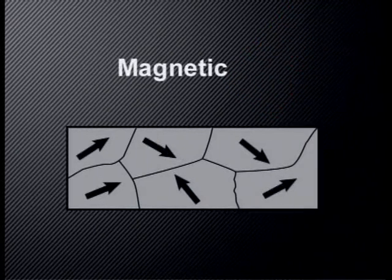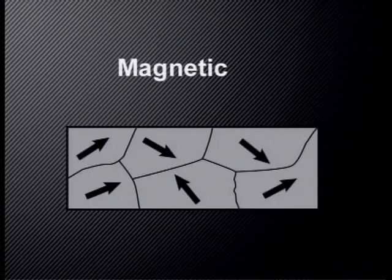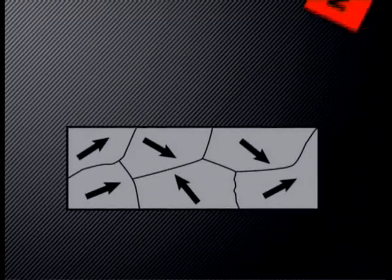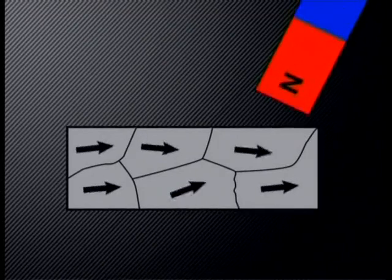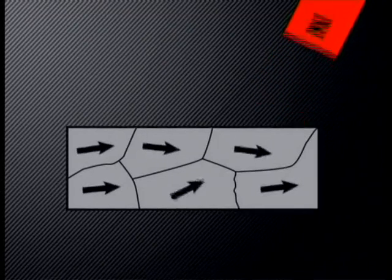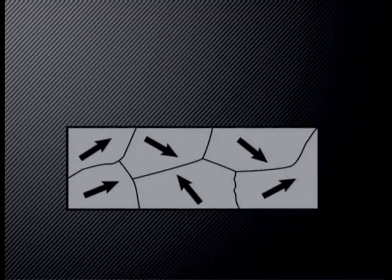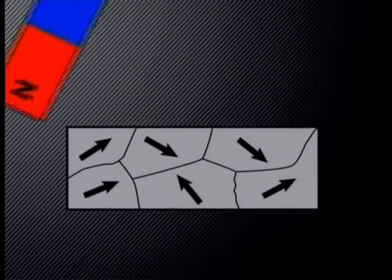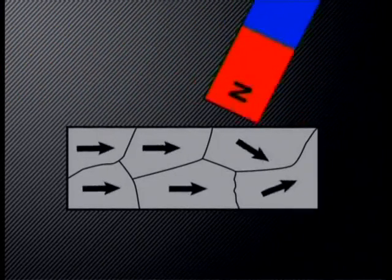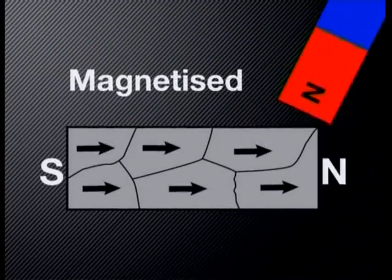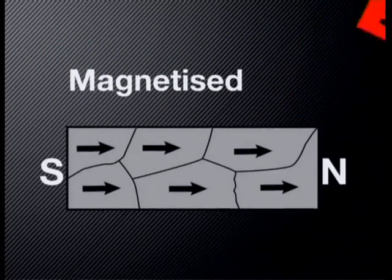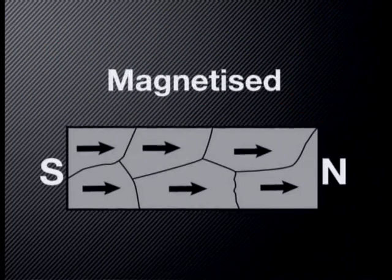Inside a magnetic material, the domains are also randomly arranged. However, when a magnet is brought close to this type of magnetic material, the magnetic domains become aligned, just like the magnetic domains of the magnet.